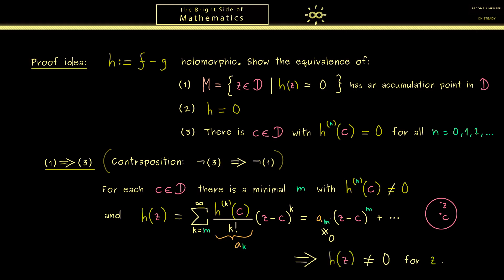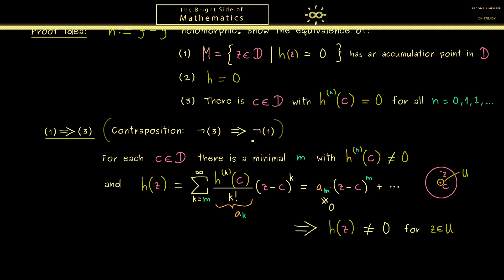We just need one small neighborhood of c, which we call U. This means that our set M, which consists of the zeros of h, has no accumulation point. So if we write it down: U without the point c, intersected with M, is equal to the empty set, because h is not 0 for all z that are not c. And with this, c can't be an accumulation point. This argumentation works for each point c we choose in d. Therefore there are no accumulation points of M at all.